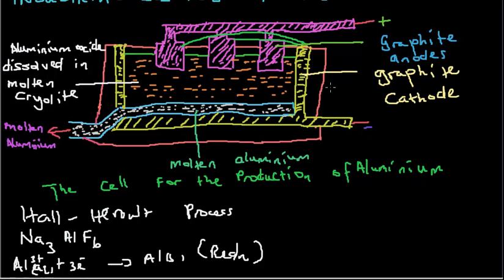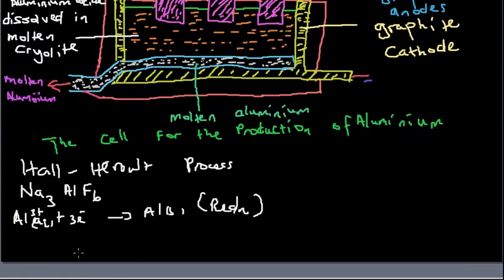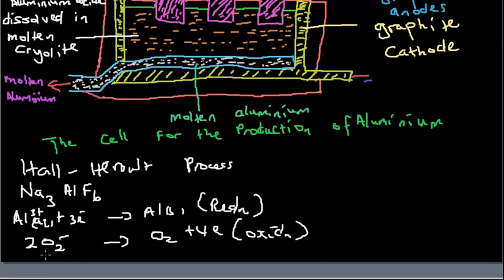At the anodes with the graphite, oxide ions lose 4 electrons in an oxidation reaction. The oxide from aluminum oxide - remember we electrolyzed aluminum oxide into Al³⁺ and O²⁻ ions.